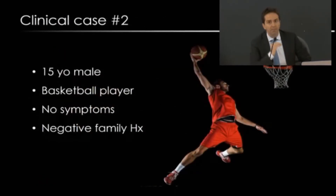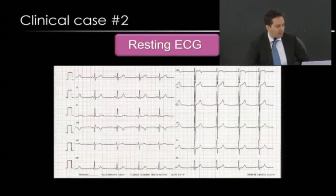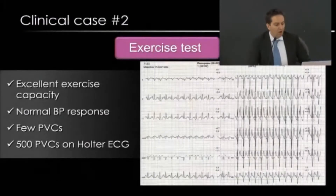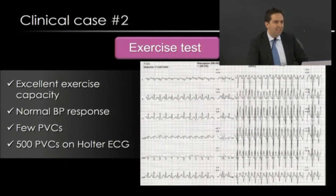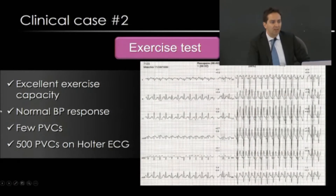Now a contrasting case: a 15-year-old male basketball player with no symptoms and a negative family history. His ECG was quite normal — sinus rhythm, normal QRS, normal repolarization. On exercise testing, he had very good exercise capacity and normal blood pressure response, but he developed PVCs with right bundle branch block morphology, meaning they originated from the left ventricle. A 24-hour Holter monitor showed approximately 500 PVCs over 24 hours — a significant arrhythmic burden.